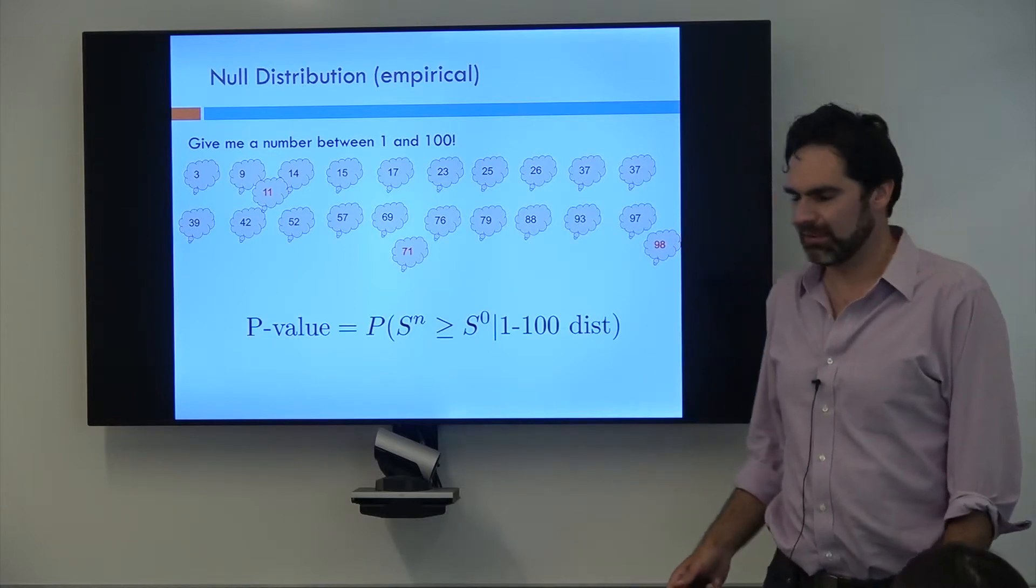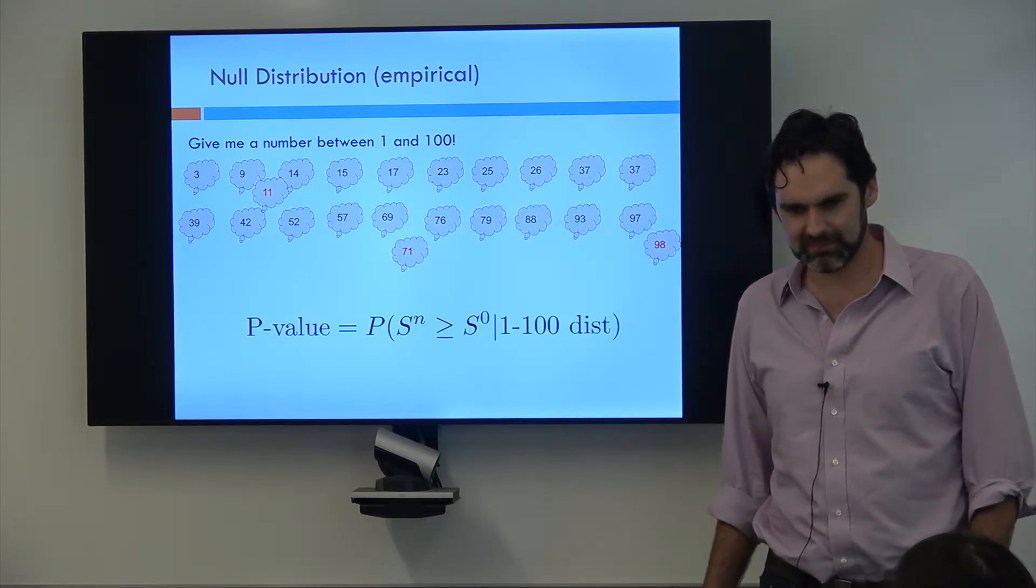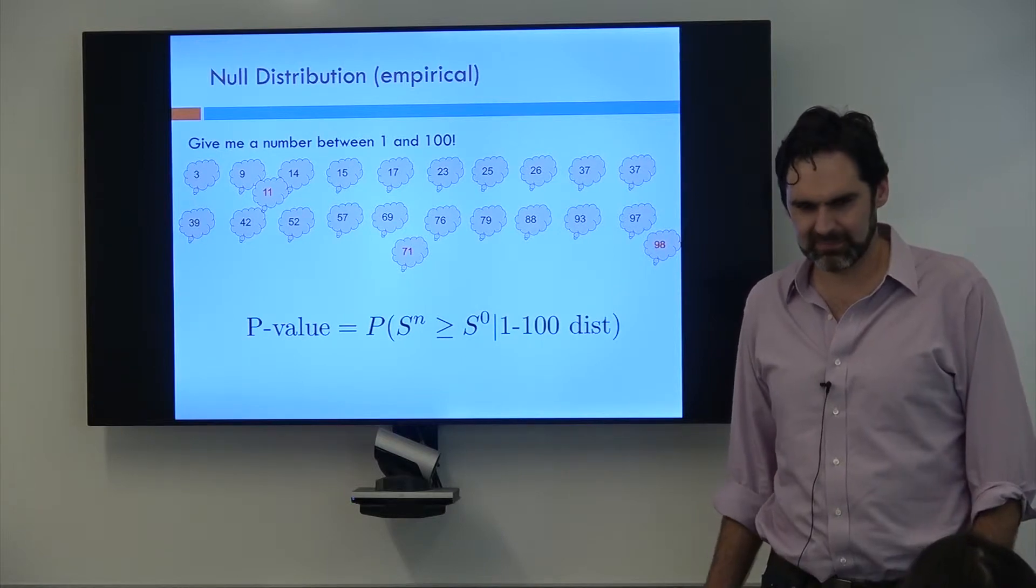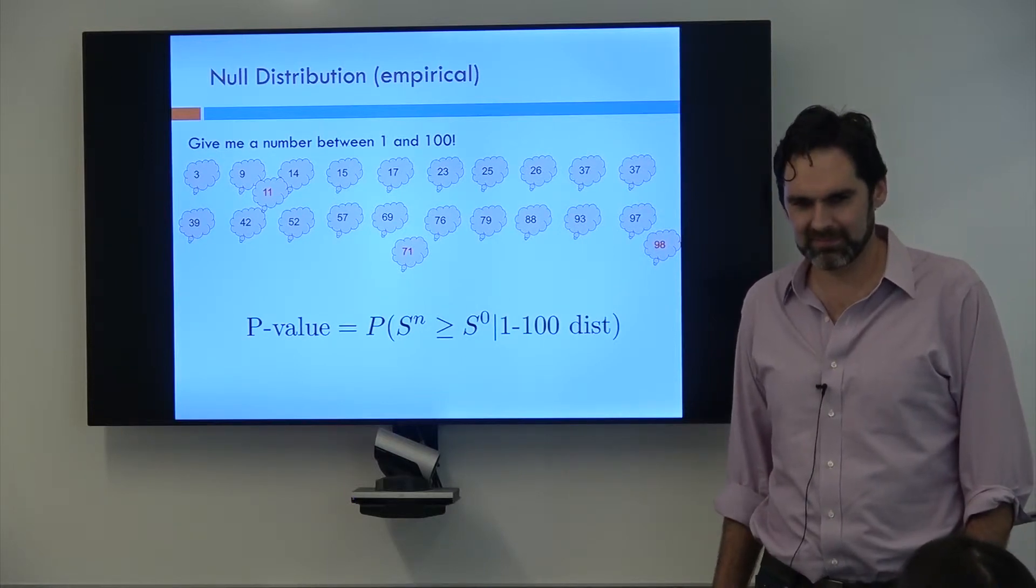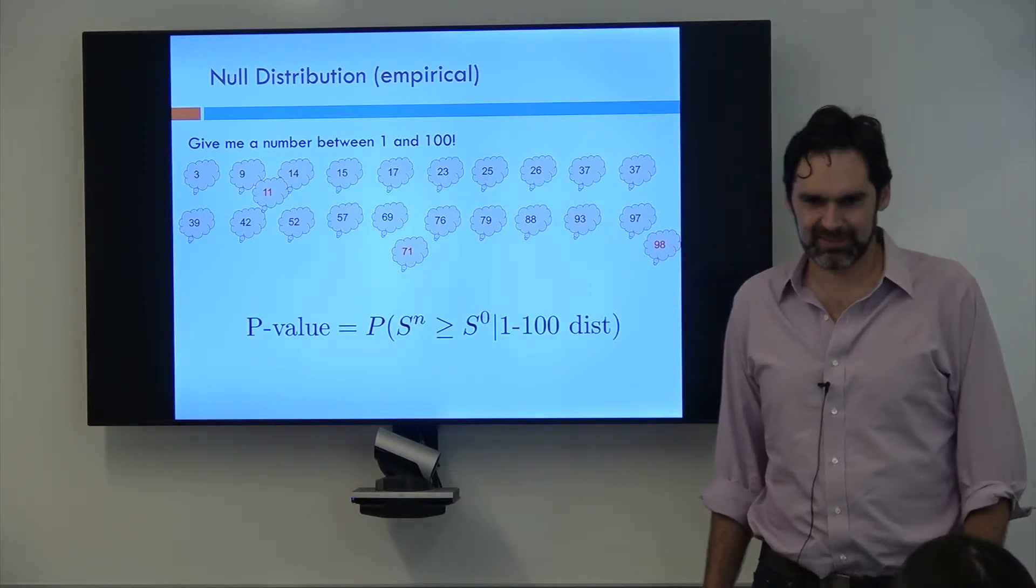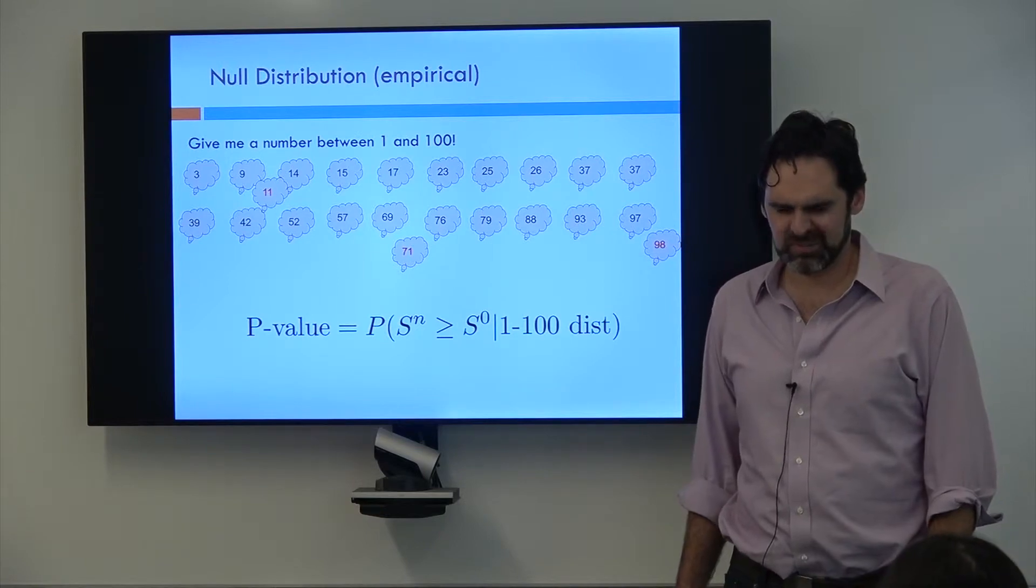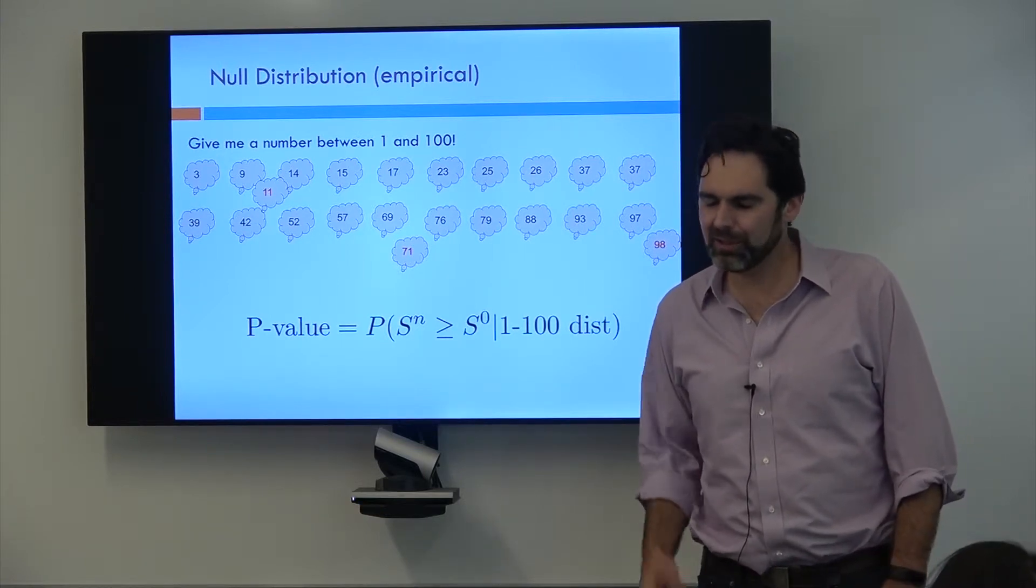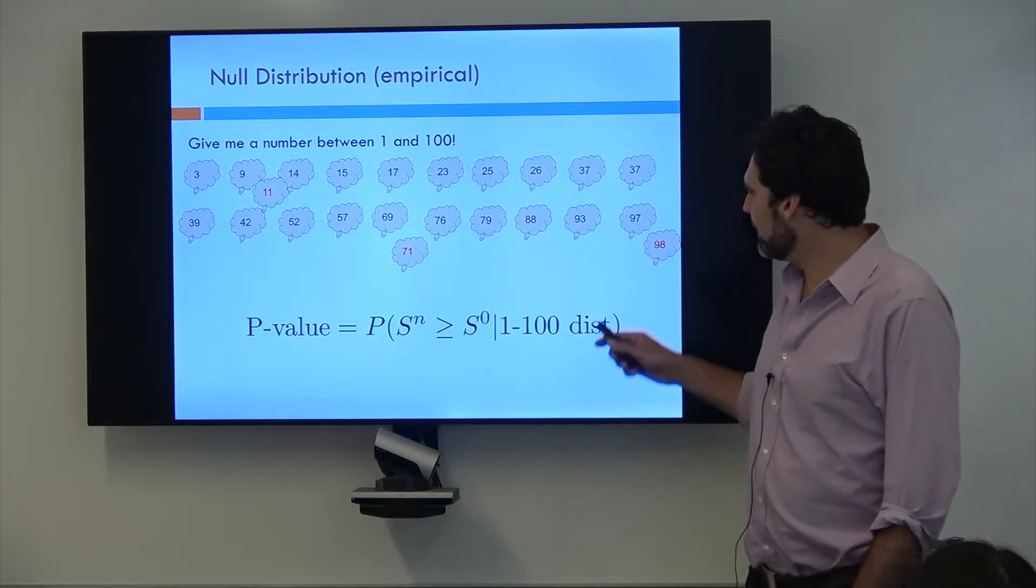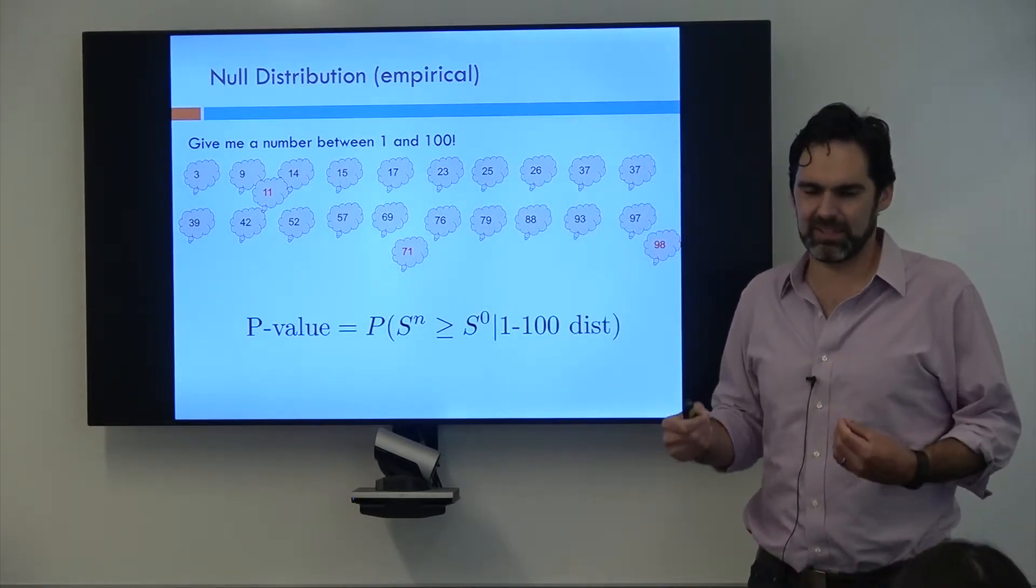Yeah, essentially. So yes? It goes back to your question. The empirical distribution has a finite or discrete domain. Mm-hmm. And it's empirical so we can't really compare that to a real distribution. I'm not sure. No, you're on the right track. Yeah, so because we only sampled 20 values, we're clearly going to miss some of the values.